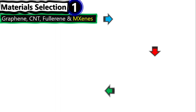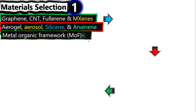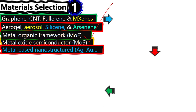This slide is dedicated for natural science students — chemistry, physics, material science. But the approach is the same for every kind of field. For material selection, for example, I want to select a carbon-based material because I know carbon is an exceptional material. You also have graphene, CNTs (carbon nanotubes), fullerene, zero-dimensional nanoparticles, aerogel, silicene, arsenene. Metal-organic frameworks have a lot of applications nowadays. Metal oxide semiconductors are very common. Metal-based nanostructured materials like gold and silver are also options.